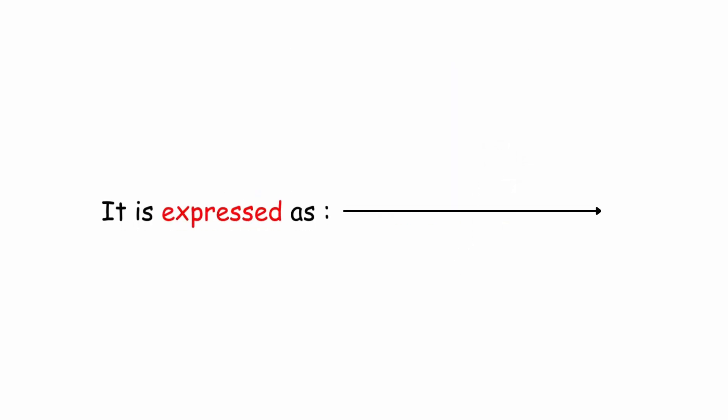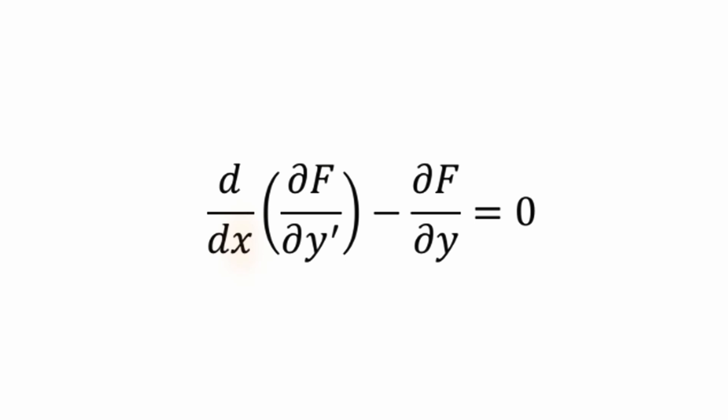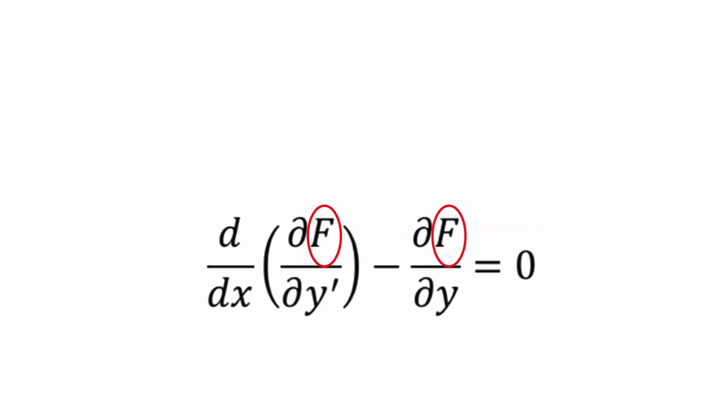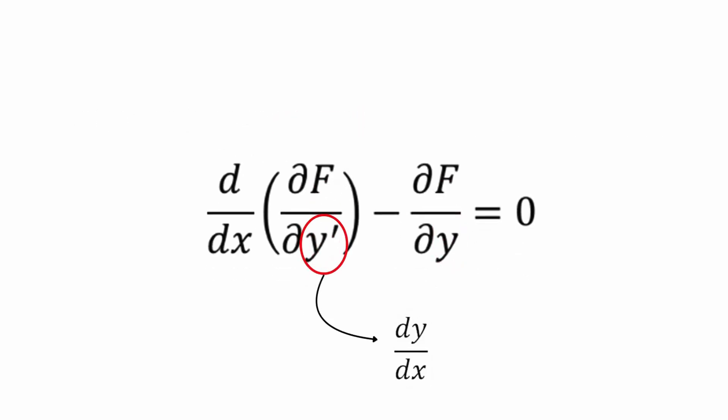It is expressed as: The total derivative with respect to x of the partial derivative of f with respect to y' minus the partial derivative of f with respect to y equals 0. Where f is a function of x, y, and y'; y is the function to be optimized, and y' represents its derivative.